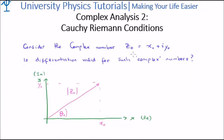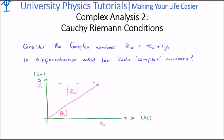Consider an arbitrary complex number z0, given as the real component x0 plus iota times the imaginary component y0. It can be represented on an Argand diagram. The question posed in the derivation of the Cauchy-Riemann conditions is: is differentiation valid for complex numbers? Differentiation is valid for the real numbers, but we don't know if it's actually valid for imaginary numbers — it's not necessarily clear or obvious.